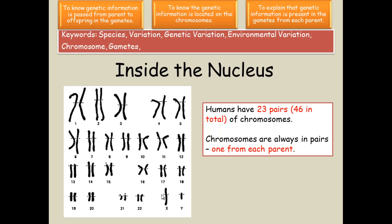As you probably remember from the last video, you get one of each chromosome from each parent. So on the list of 23 that you have, one will have come from your mother and the other from your father, and it is the same with all of the chromosomes. The same is also true with the 23rd, or the X and Y chromosome.